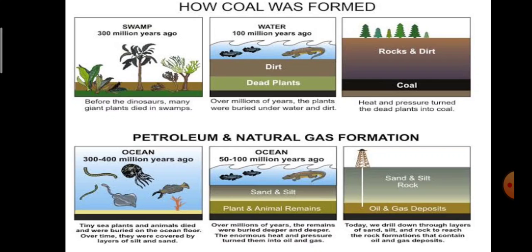Next is petroleum and natural gas. Petroleum and natural gas deposits are found under the earth and under the surface of the sea. Sea plants and animals died and were buried on the ocean floor. Over time, they were covered by layers of silt and sand. The main difference between coal and petroleum formation is that petroleum is formed from tiny sea plants and animals.